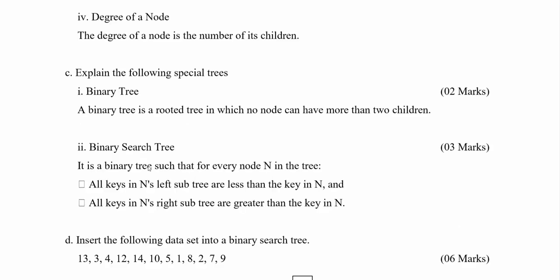Part C: explain the following special trees. There are two trees mentioned — the first one is a binary tree and the other one is a binary search tree. If you compare these two, there is a small difference, but there are certain things that can be taken as common features. Both a binary tree and a binary search tree have at most two children for one particular node. For the binary tree, the definition is: a binary tree is a rooted tree in which no node can have more than two children.